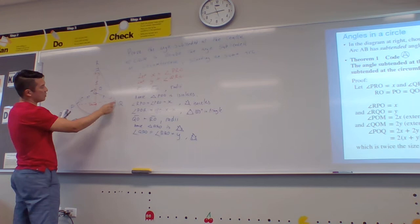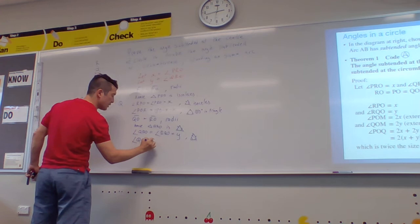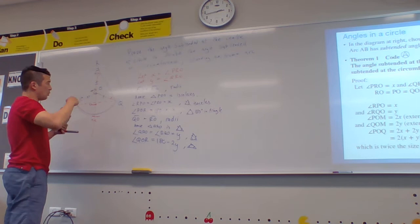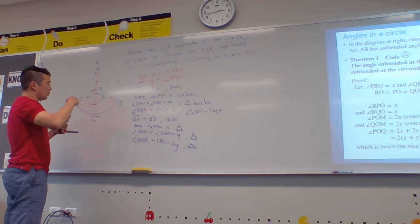Now that means that this guy in the middle, what's that? Angle QOR is equal to 180 minus 2Y because 180 degrees in the triangle. It's almost there, guys. So that's 180 minus 2Y.